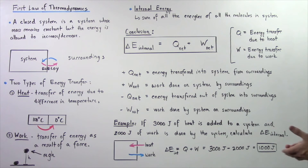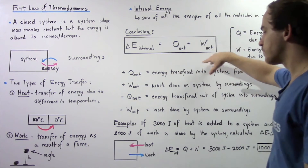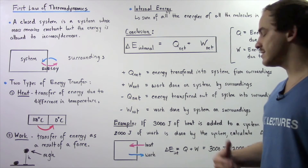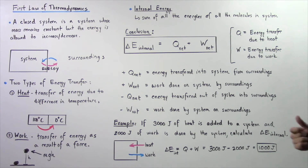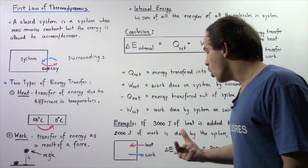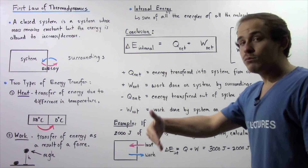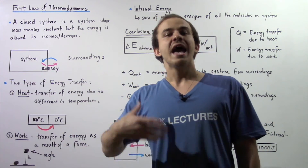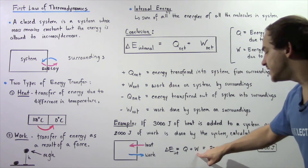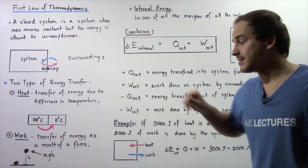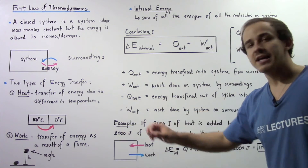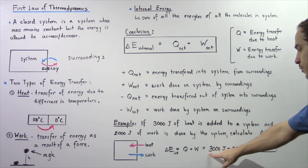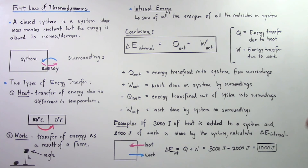Let's look at the following example using the first law of thermodynamics. If 3,000 joules of heat is added to our system and 2,000 joules of work is done by the system, calculate the change in internal energy. Heat flows into our system and work is done by the system on the surroundings, so energy is transferred out as a result of the work. Therefore W is negative and Q net is positive. Q net is 3,000 joules and W net is negative 2,000 joules, giving us 3,000 minus 2,000 equals 1,000 joules.